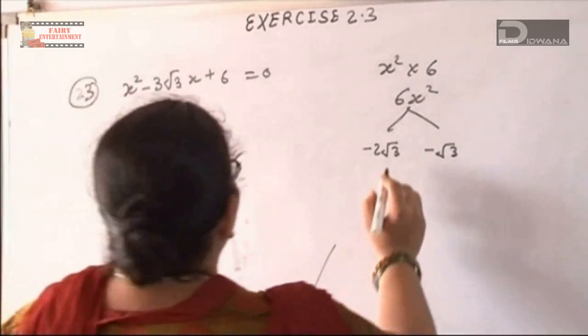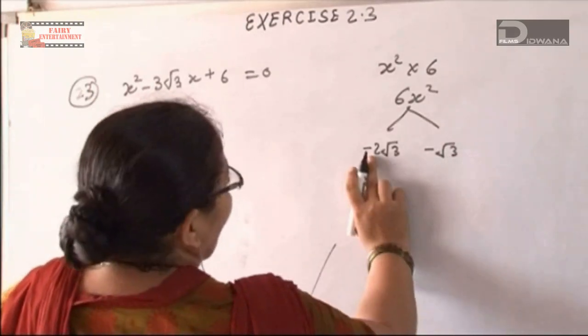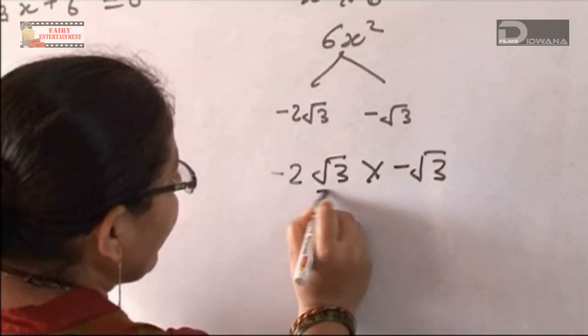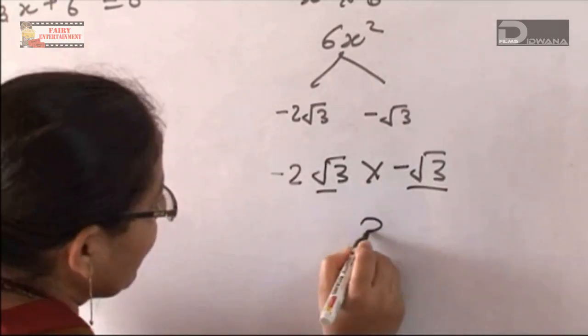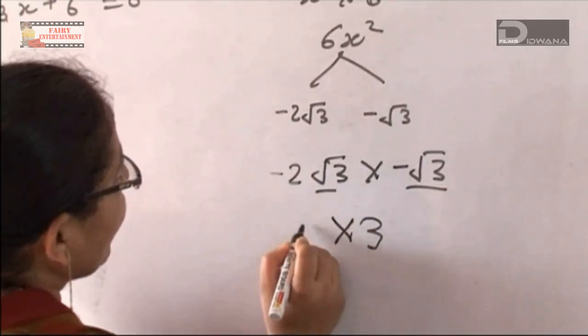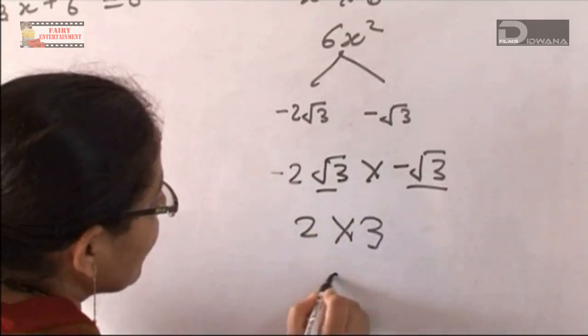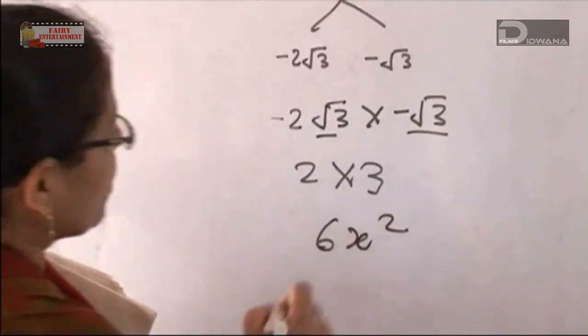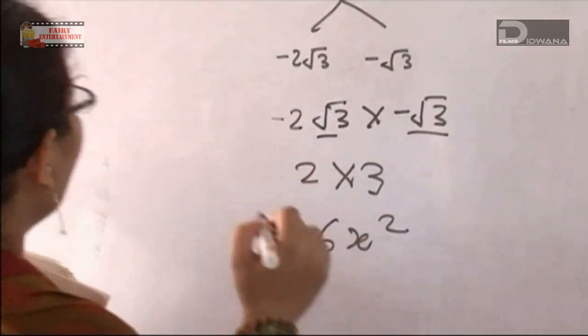If √3 and √3 multiply, then we will get 3. And 2 times 3 equals 6. So √3 times √3 will be 3 multiplied by 2, so we will get the answer 6. This confirms 6x².